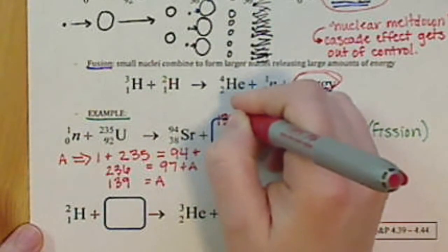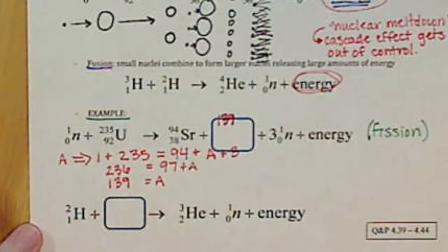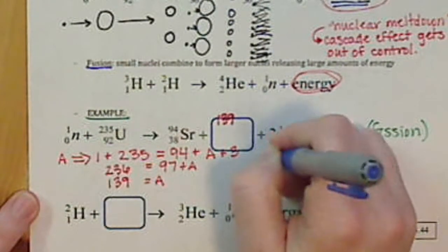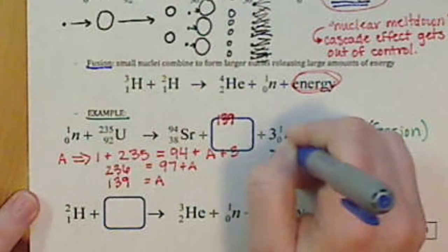My apologies if you can't really see this. I'm trying to write big and bold. We'll keep this color coded to try and help with the visual of this. So now we need to determine our atomic number, right? Our lower number.